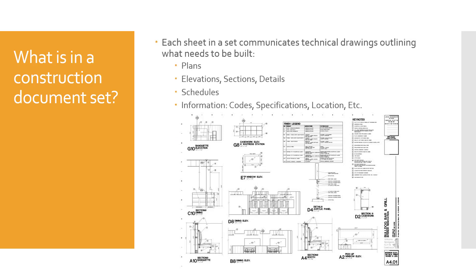Each sheet in a set communicates technical drawings outlining what needs to be built. You'll see floor plans, elevations, sections and details, and a whole lot of schedules — which are basically tables with typed information — as well as additional information like building codes that are met, occupancy and fire codes, specifications, and the location of the building. There's just a lot of information included in a CD set.